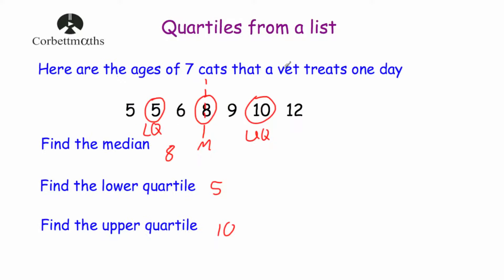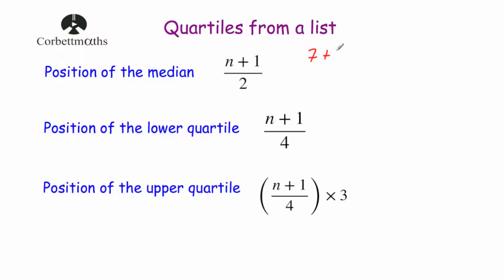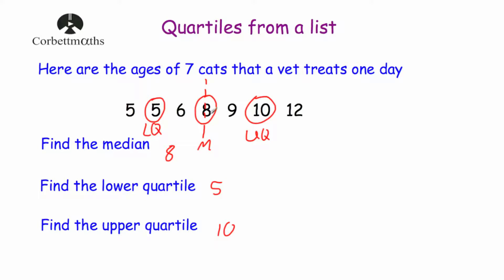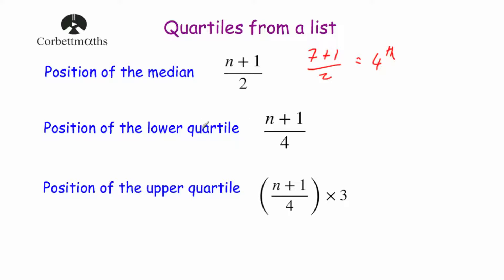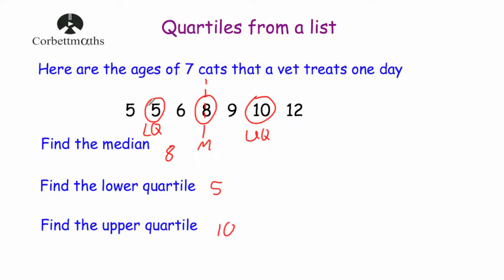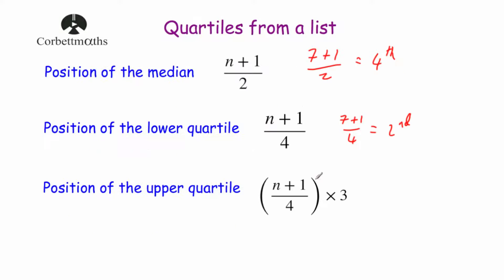In our last list we had seven numbers, so we take 7, add 1, and divide by 2. Seven plus one is 8, divided by two is equal to 4. So that would be our fourth value in the list, and our median was indeed our fourth value. For the lower quartile, the version of the formula specified is n plus 1 divided by 4. So we take seven, add one, and divide by four. Seven plus one is 8, divided by four is 2, so the second value is the lower quartile.